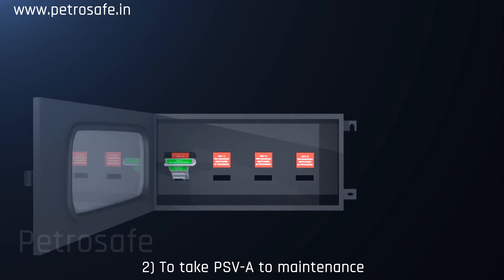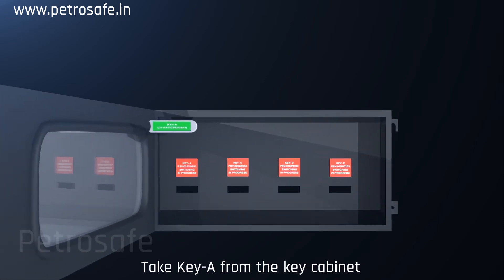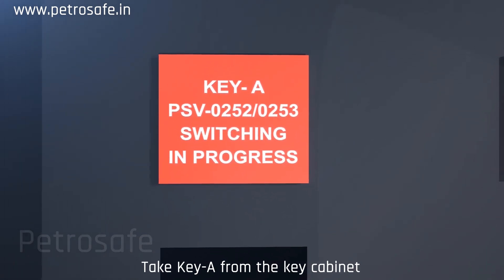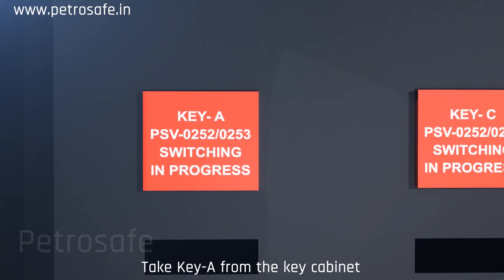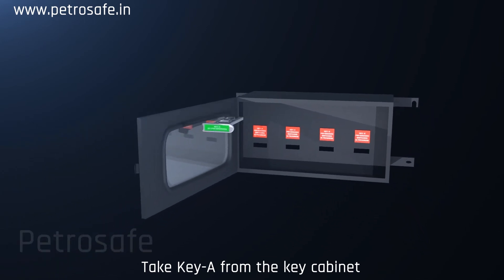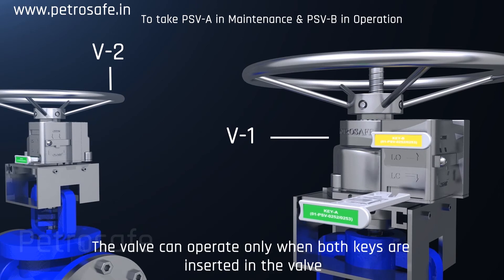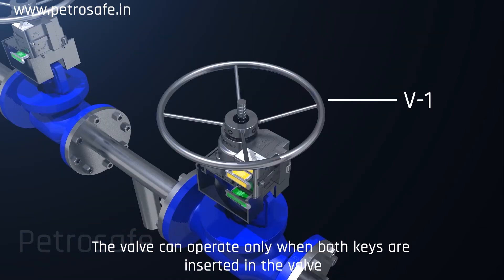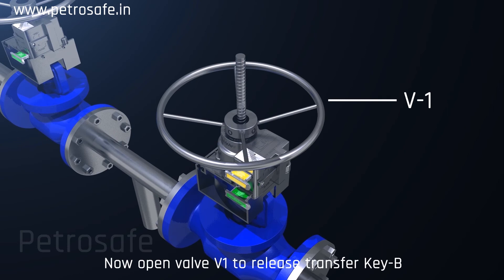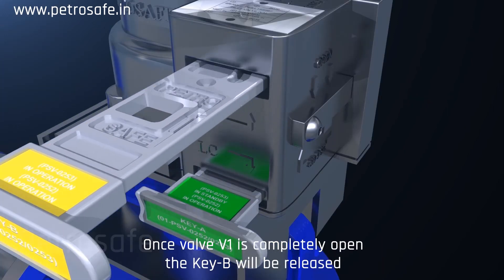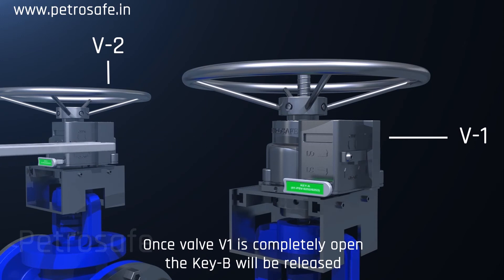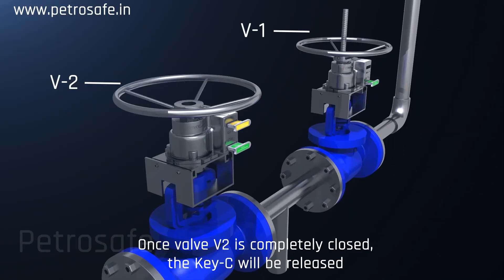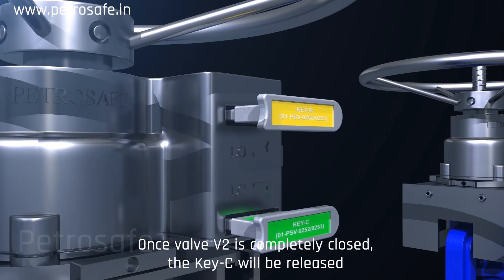Step 2: To take PSV A to maintenance. Take key A from the key cabinet and insert it into valve V1. The valve can operate only when both keys are inserted. Now open valve V1 to release transfer key B. Once valve V1 is completely open, key B will be released. Remove key B from V1 and insert it into valve V2 and close the valve. Once valve V2 is completely closed, key C will be released.